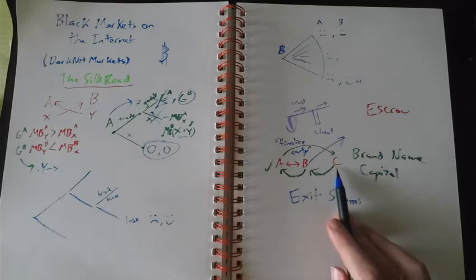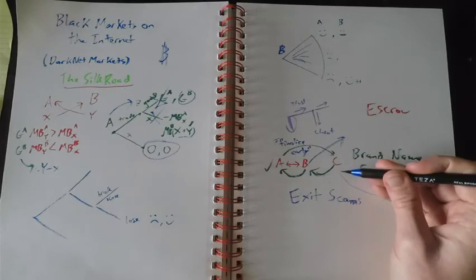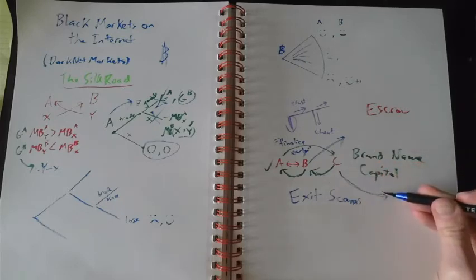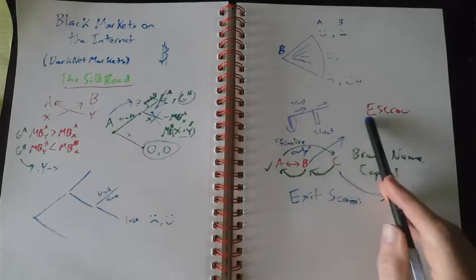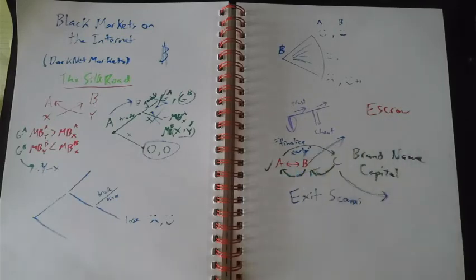And then, of course, there's also the potential for the market itself to pull an exit scam. This is another thing that happens. So, even with this, we don't have a perfect system with escrow, but we are able to overcome these trust problems enough to at least get some exchange happening in a setting where we shouldn't expect exchange at all.